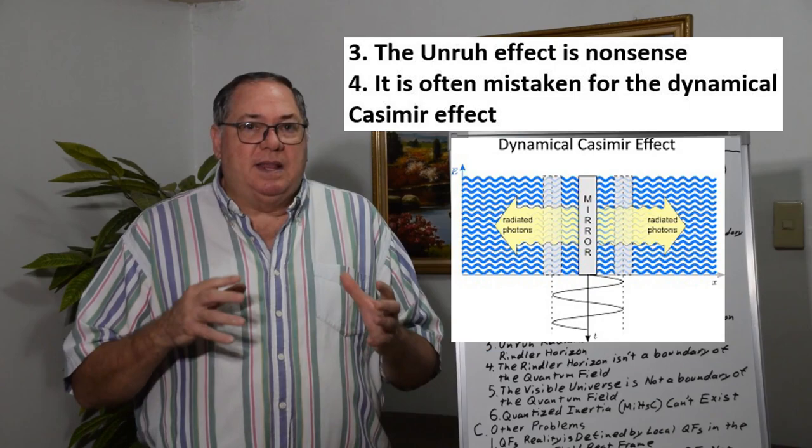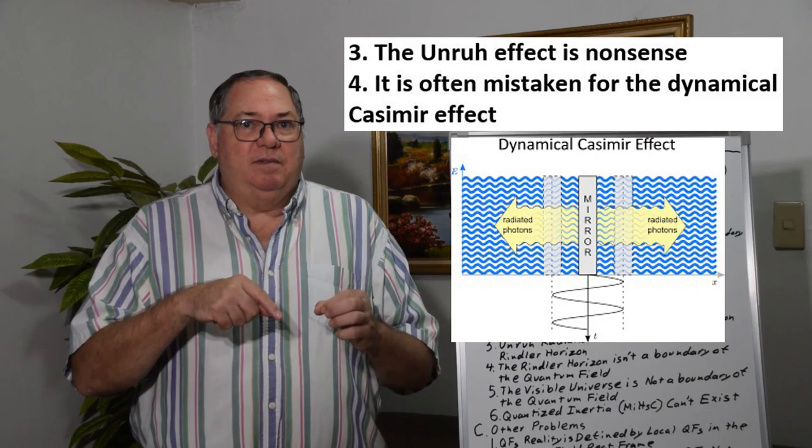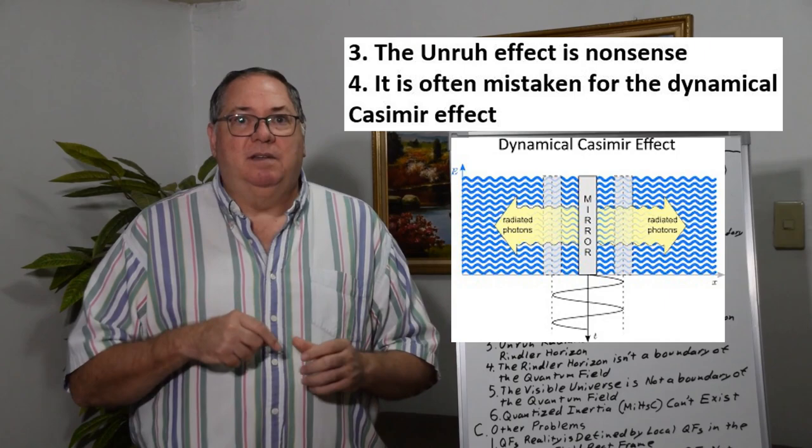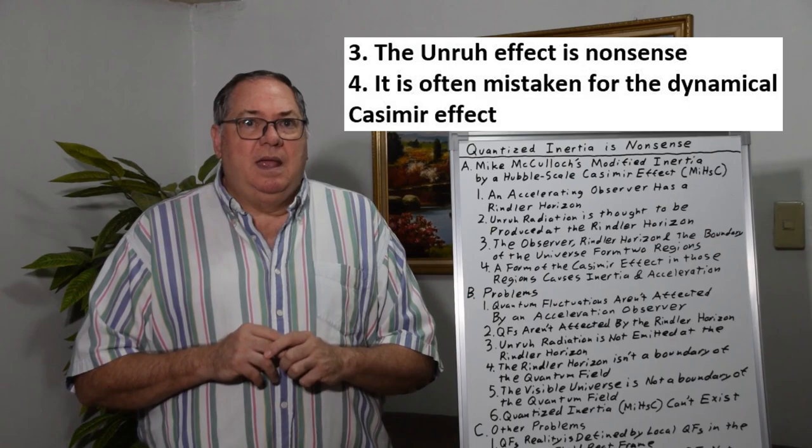The dynamical Casimir effect is normally thought of as the spinning mirror problem. If you spin a mirror fast enough, you can have black body radiation light being emitted off the surface of the spinning mirror as the kinetic energy of the mirror gets converted to light by interacting with individual quantum fluctuations.